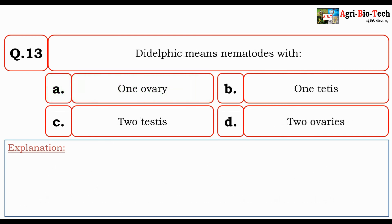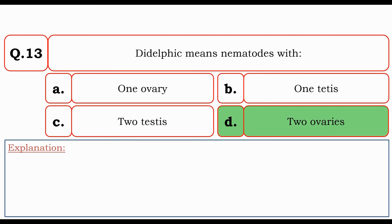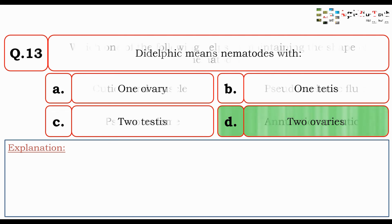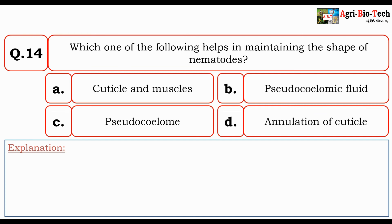Next question: Didelphic means nematodes with — 1 ovary, 1 testis, 2 testes, or 2 ovaries? The correct option is 2 ovaries. Next question: Which one of the following helps in maintaining the shape of nematodes? The given options are cuticle and muscles, pseudocoelomic fluid, pseudocoelom, or annulation of cuticle. The correct option is pseudocoelomic fluid.